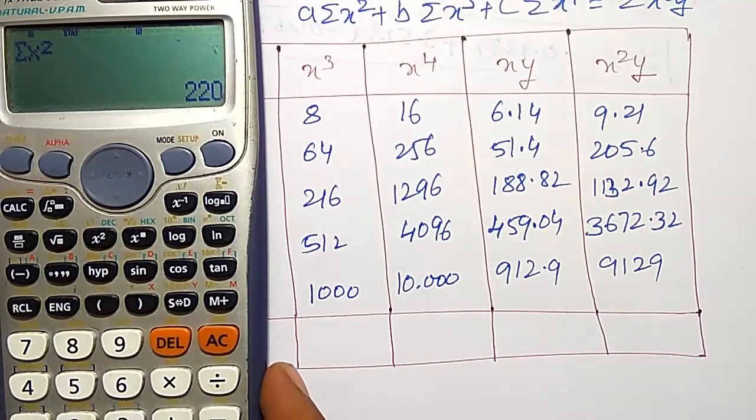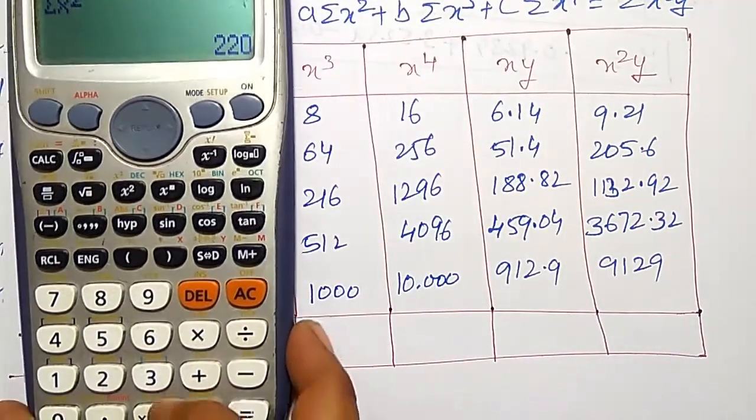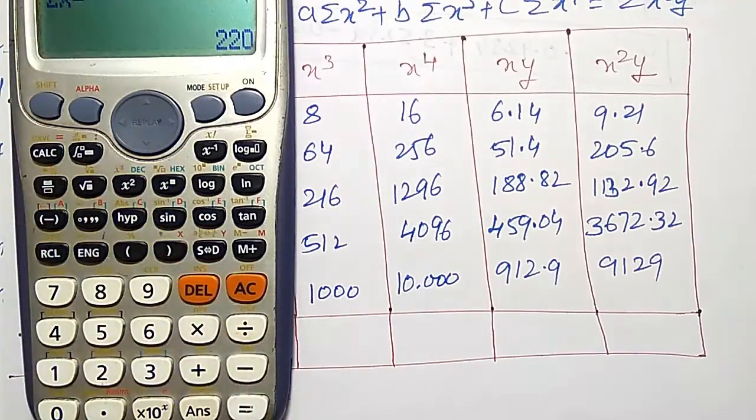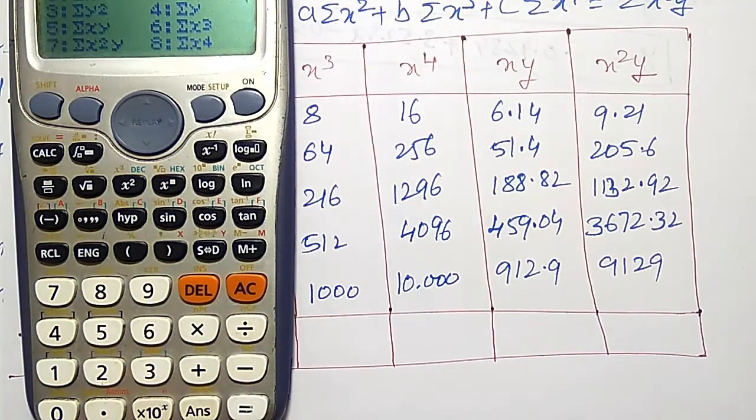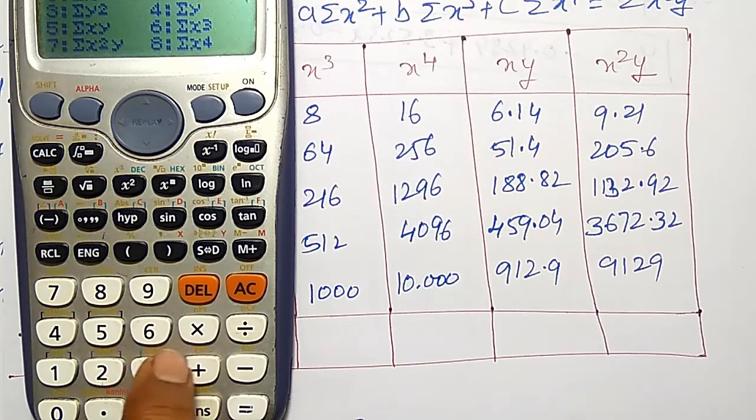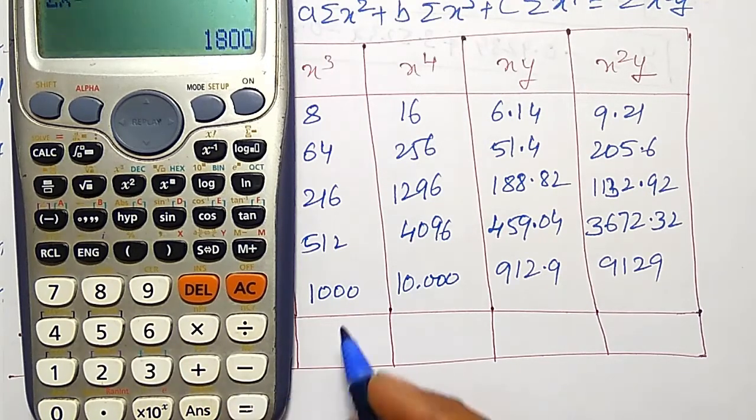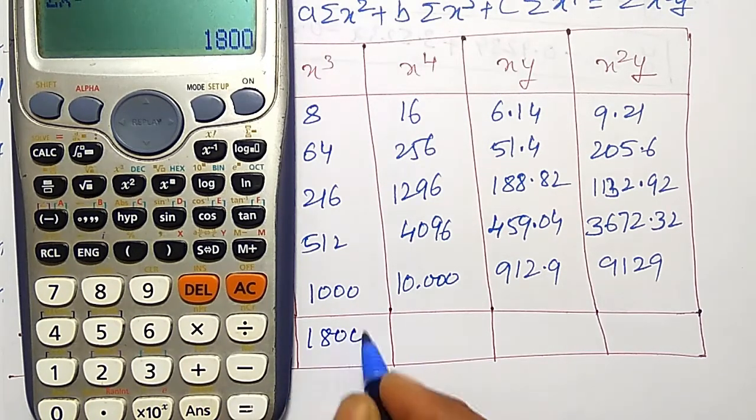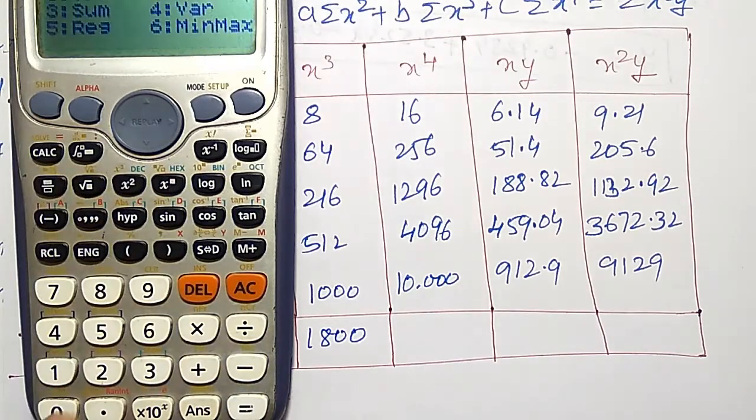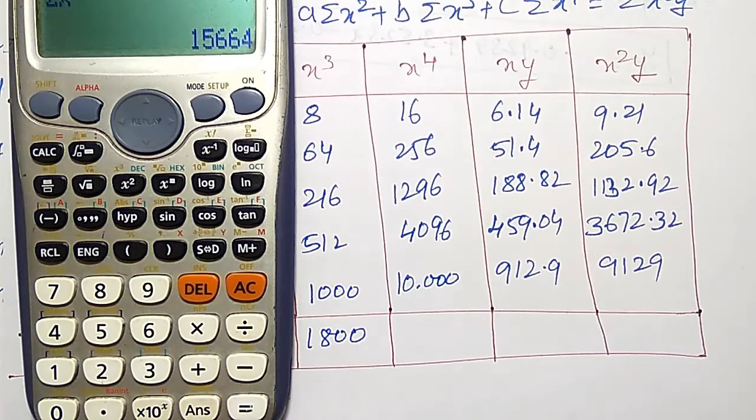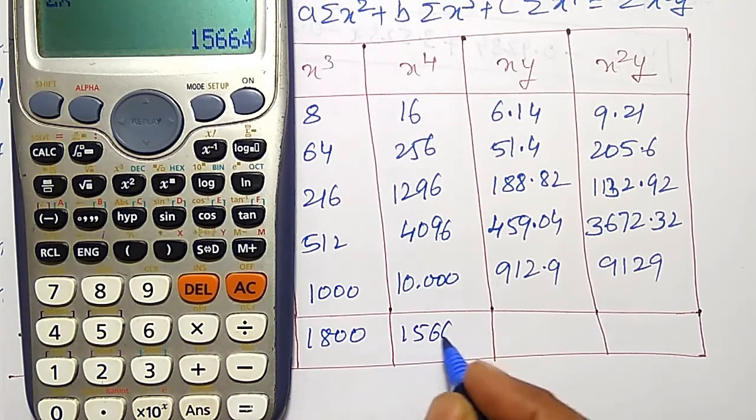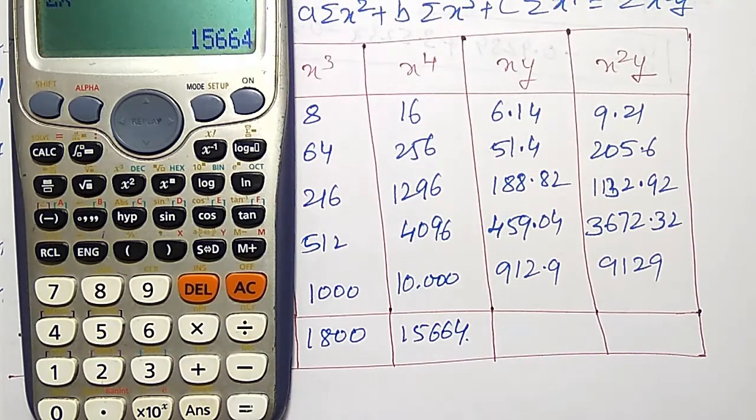Like that, I want summation of x cube. To find summation of x cube, shift 1, sum, x cube option is 6. I am getting 1800. Like that, shift 1, sum, x raise to 4, option 8. I am getting 15664.